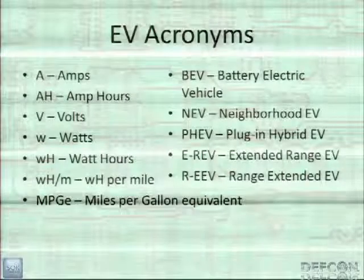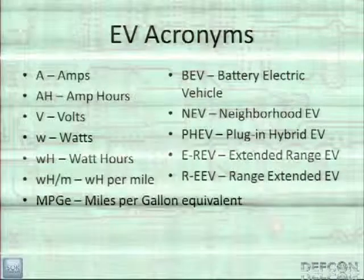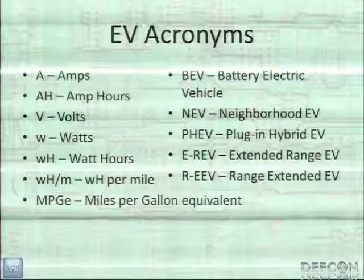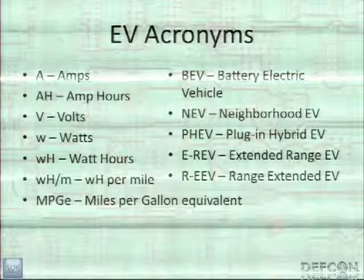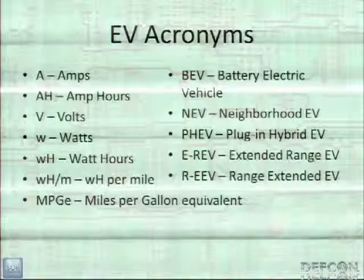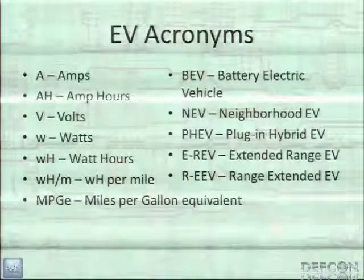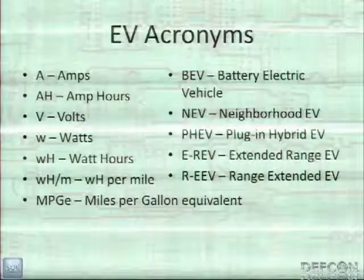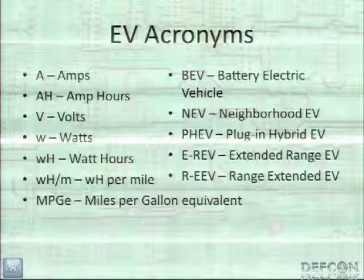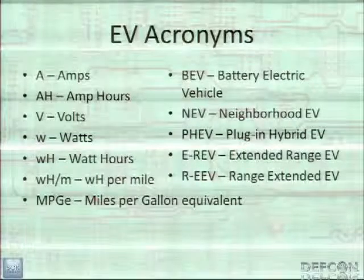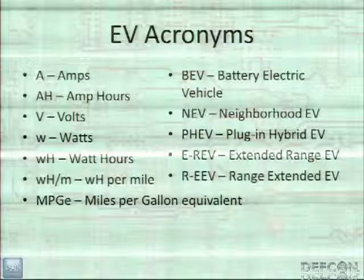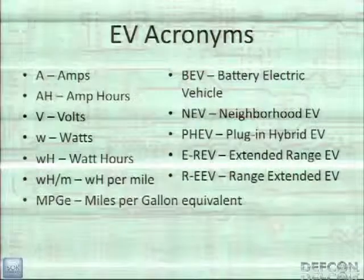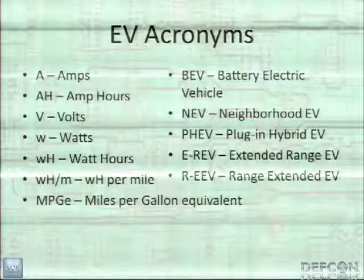Some acronyms you need to know: amps, volts; amp hours measures battery capacity; watt hours is how much power you get from the battery; watt hours per mile is how much power you need to go somewhere; miles per gallon equivalent lets you compare to a gas car. A BEV is a battery electric vehicle, usually just called an EV. An NEV is a neighborhood EV — short range, low speed. Plug-in hybrids run on gas but can also be plugged in. Extended range EV and range extended EV are just terms GM made up because they didn't want to call it a hybrid.